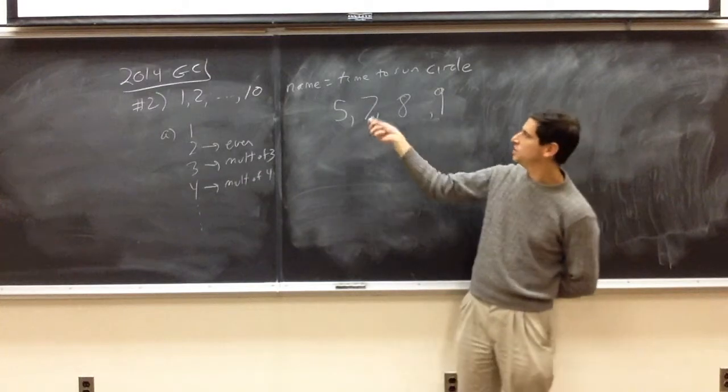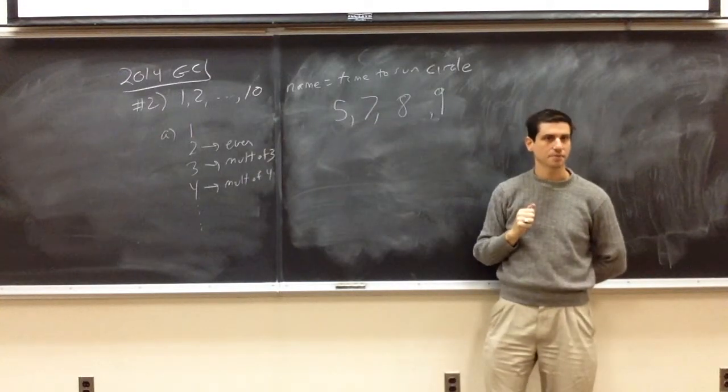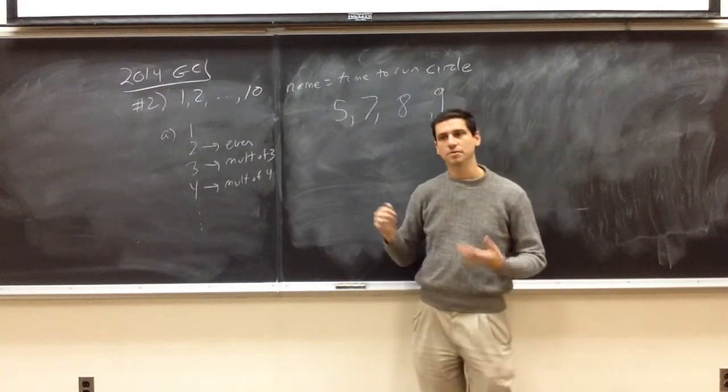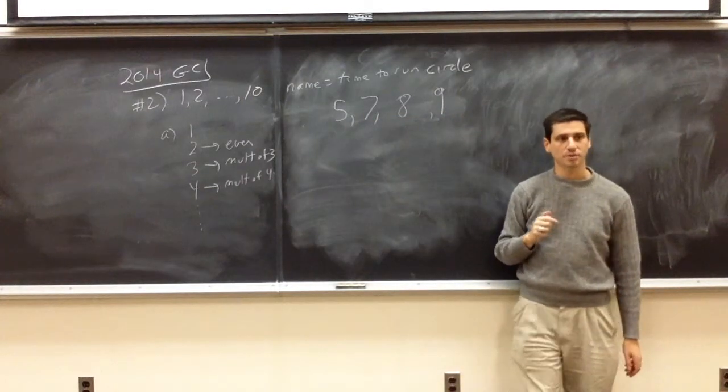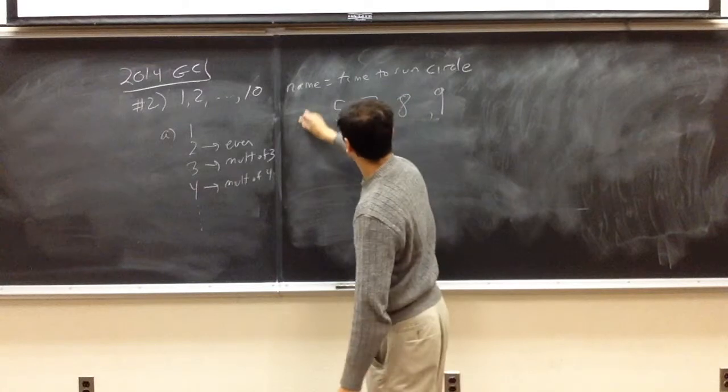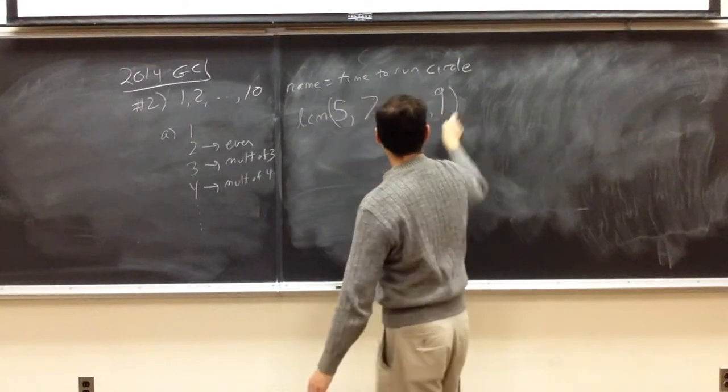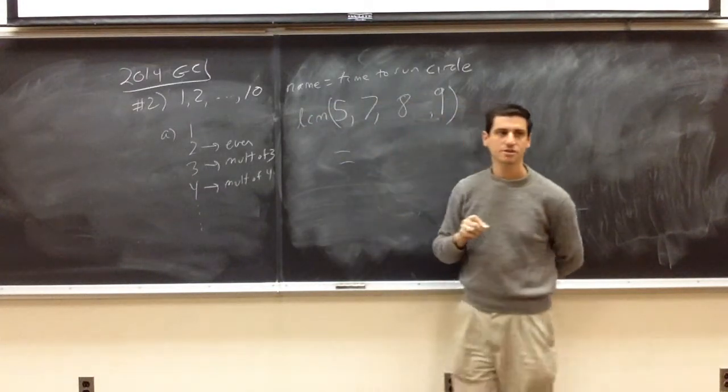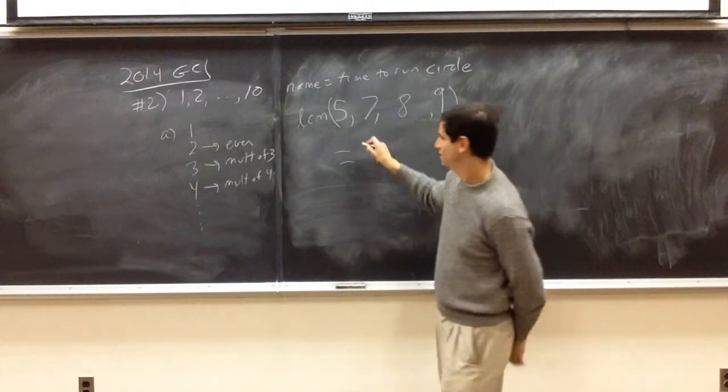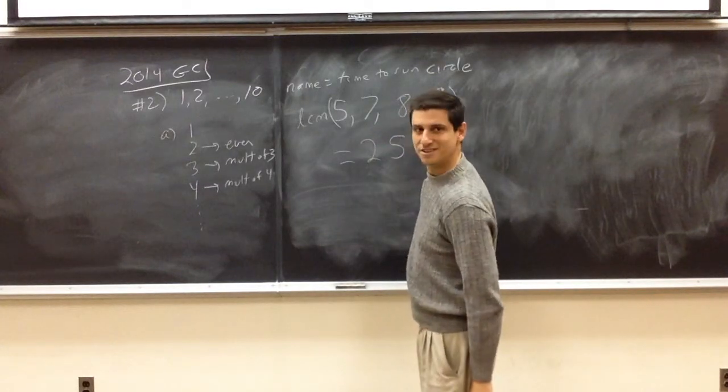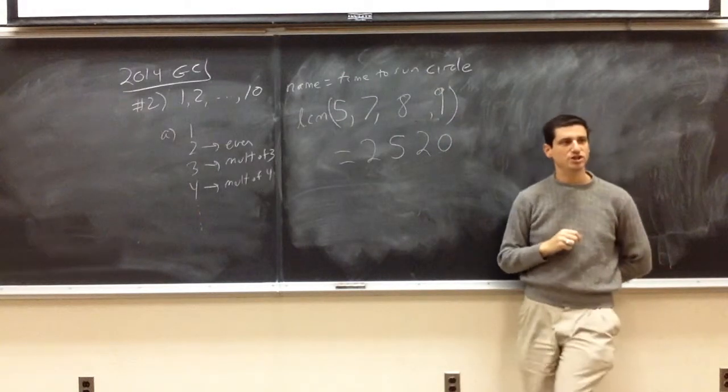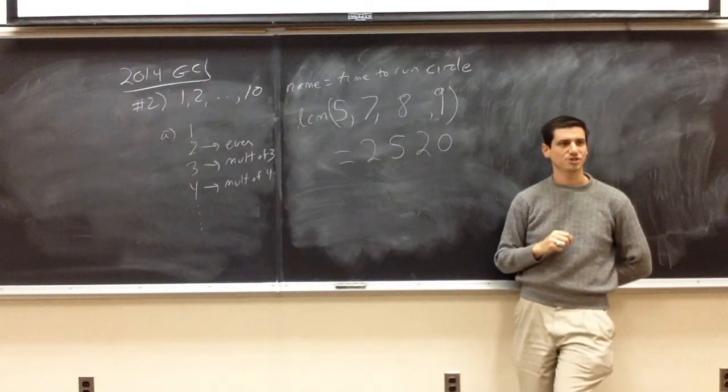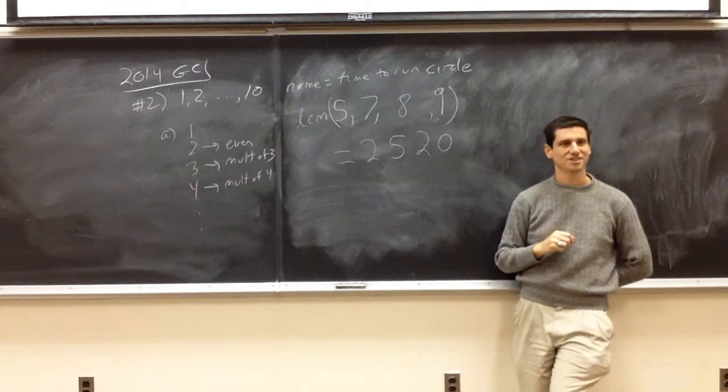And so, what's nice is these numbers are relatively prime. We look at the least common multiple. Do you know what this number is? 2,520. And so, it just barely misses for 2014.